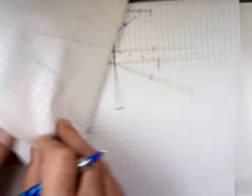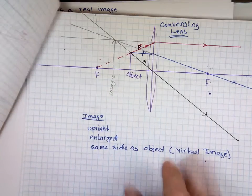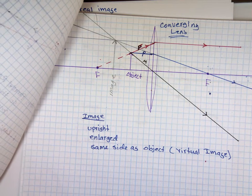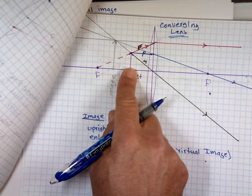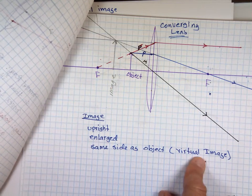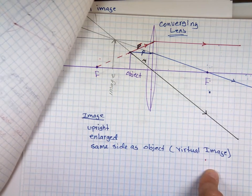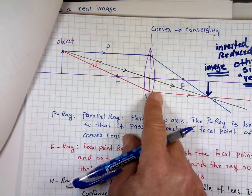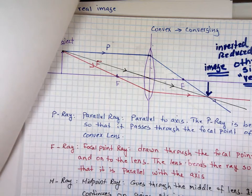With a converging lens, I can also rule out the object being placed between F and the lens, because that gives a virtual image. Since we have a real image here, it's a converging lens with the object beyond F. That's the key: a real image tells me it's a converging lens.